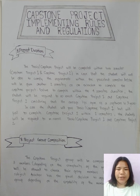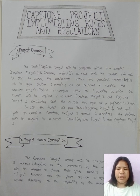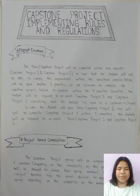Capstone Project Implementing Rules and Regulations. Project Duration: The thesis Capstone Project will be completed within two semesters — Capstone Project 1 and Capstone Project 2. In case the student is unable to comply with the requirements within the prescribed semester, he or she will be given another two semesters as an extension. Failure to complete within the four-semester duration, the student will be required to re-enroll Capstone Project 1 and Capstone Project 2, considering that the average lifespan of a software is three years.